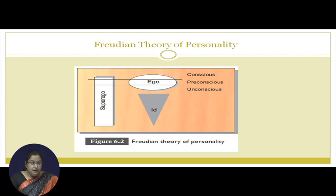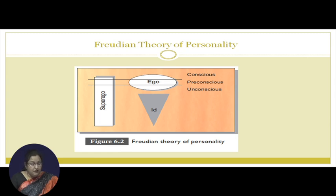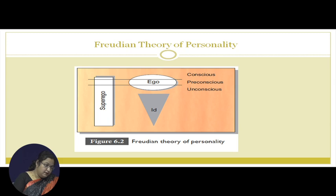As you can see in this diagram, the ID is an unconscious behavior, whereas the ego flows through conscious, unconscious, and pre-conscious behavior, and we also have the superego, which is again a very conscious behavior.